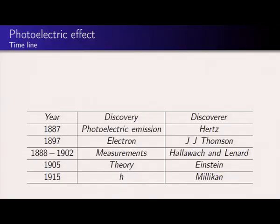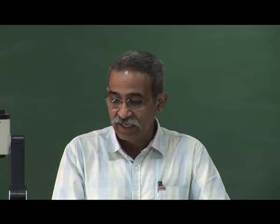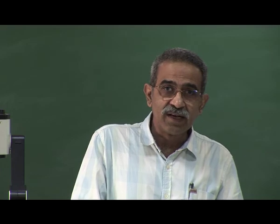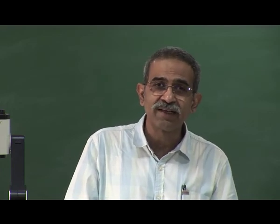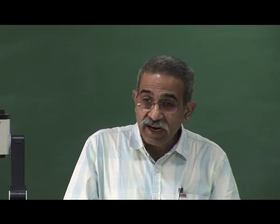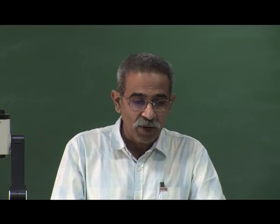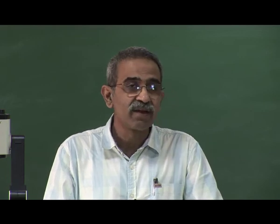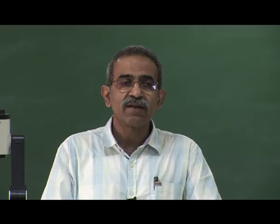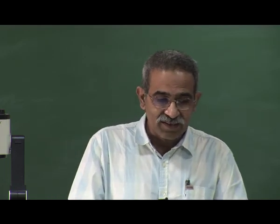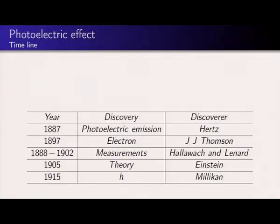From 1888 onwards — even before the discovery of the electron — all the way up to 1902, Hallwachs and Lenard made a series of experiments to find the properties of these photoelectrons. The electrons emitted when radiation falls upon a metallic surface are called photoelectrons, and the current produced is called the photocurrent. A good question is: what does this photocurrent depend upon? That is where the surprising results started. And in order to understand these results, in 1905 Einstein gave his theory — really a model.